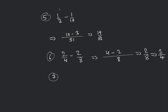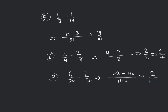Question number 7: 6 by 20 minus 2 by 7. That will be 140 minus 42, giving 2 by 140, or you can say 1 by 70. 1 by 70 will be your final answer.